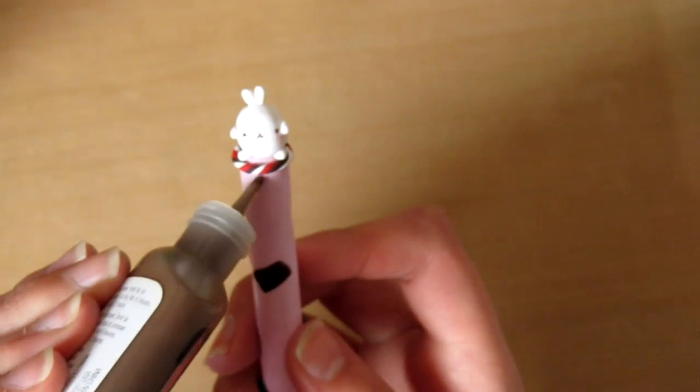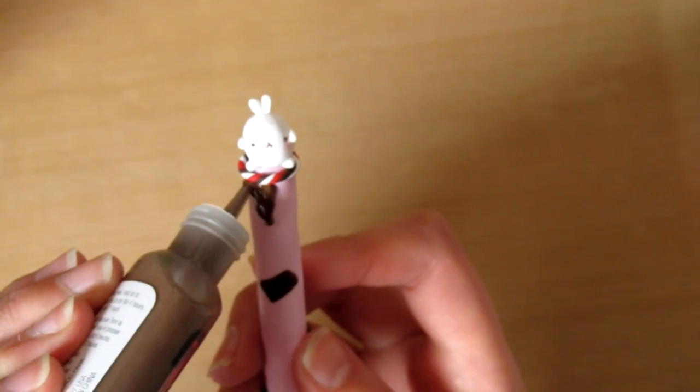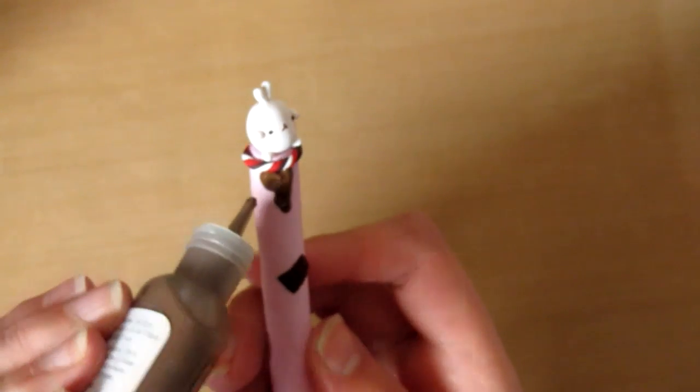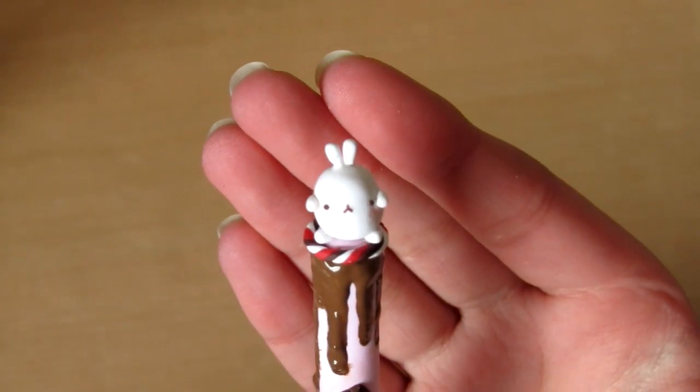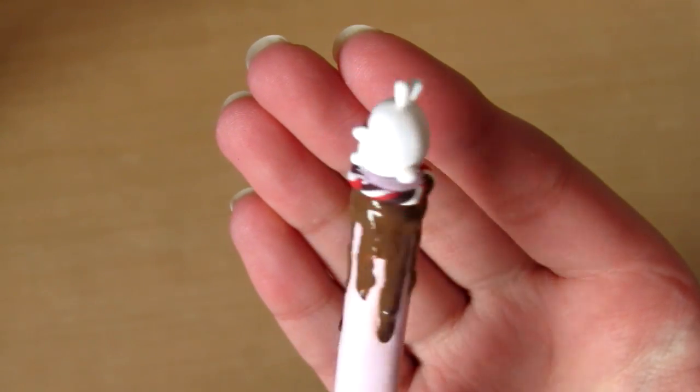So basically you just want to make a kind of melting chocolate effect. Sorry I didn't film all of this as my memory card ran out of space. But it should look something like this. And it doesn't have to be too neat as it is meant to be melted chocolate.